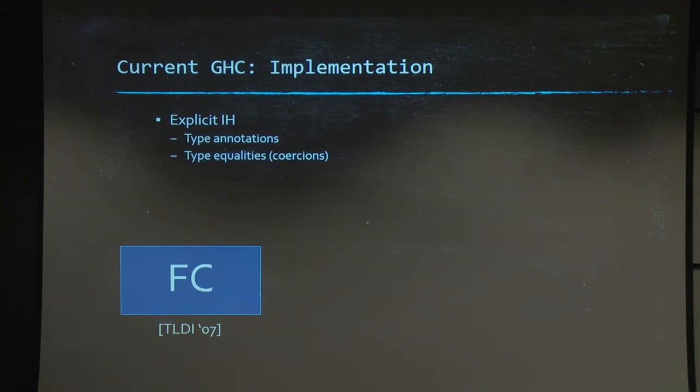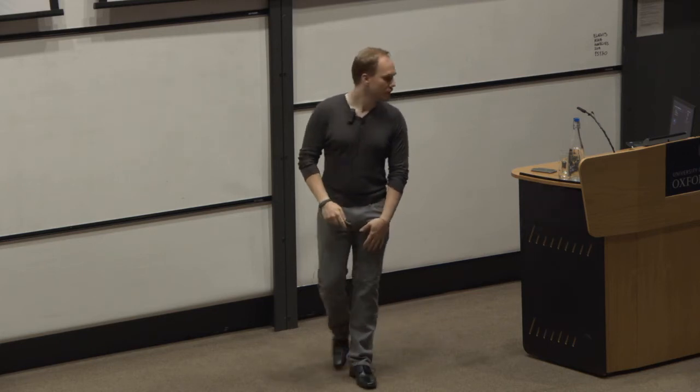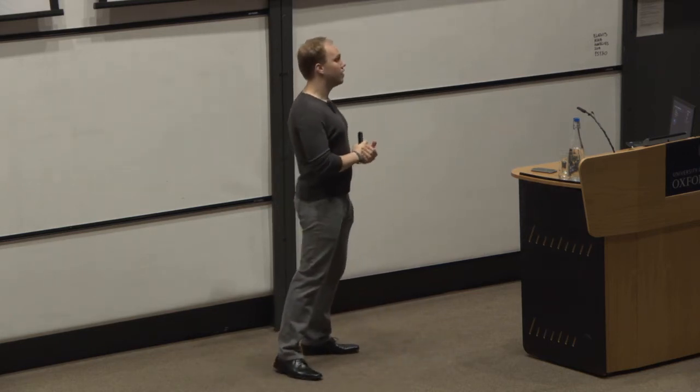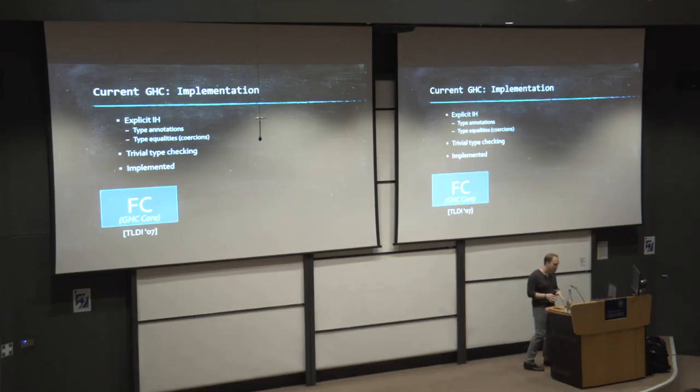We also need things about type equality. And in particular, coercions. A coercion is a witness for a type equality that we use, for instance, for cast to cast terms. Thanks to all these annotations, it has a completely trivial syntax directed type checking. And it's also implemented. And what we need to note here is that core is actually really close to the theory of FC defined in the various FC papers. So, this is a very practical type system.